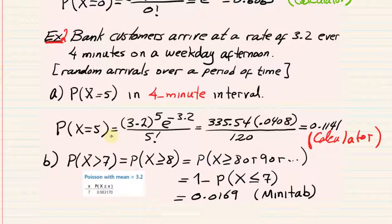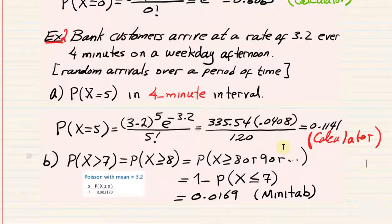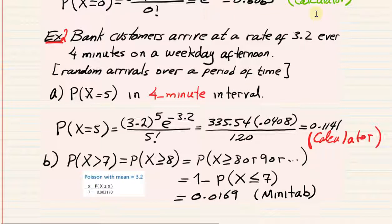For Part B of the bank example: P(X > 7) means 8 or more. Using the complement: P(X > 7) = 1 − P(X ≤ 7). This turns out to be approximately 0.0169. Let's confirm these values in Megastat and Minitab.